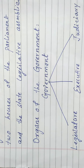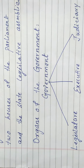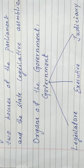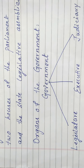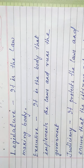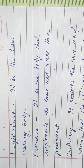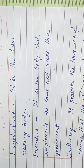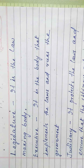What are the organs of the government? In India, the government has three organs: legislature, executive, and judiciary. What is legislature? It is the lawmaking body.